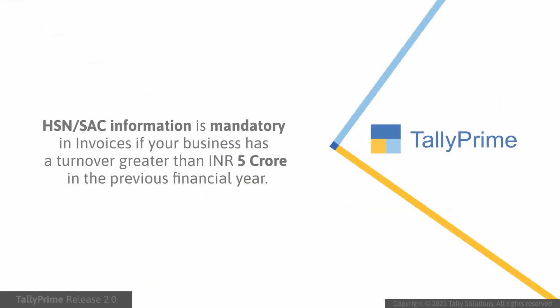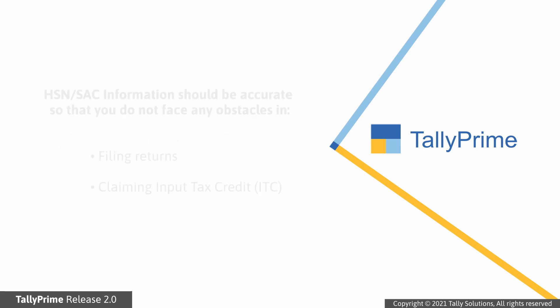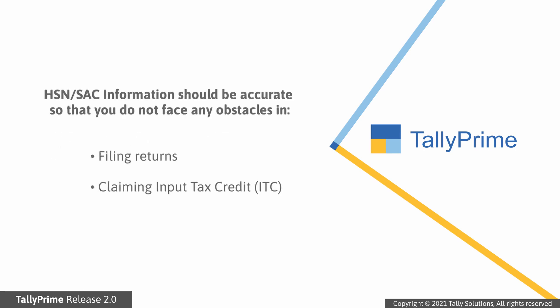You must be furnishing HSN or SAC information in transactions if your business has a turnover exceeding rupees 5 crore in the previous financial year. It is important that the information is accurate so that you do not face any obstacles in the process of filing returns or claiming input tax credit.